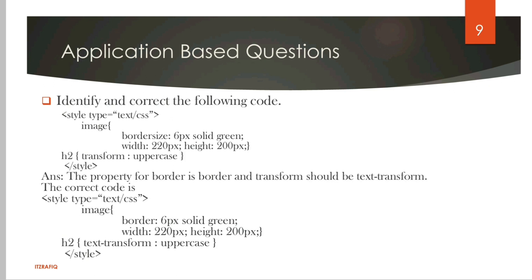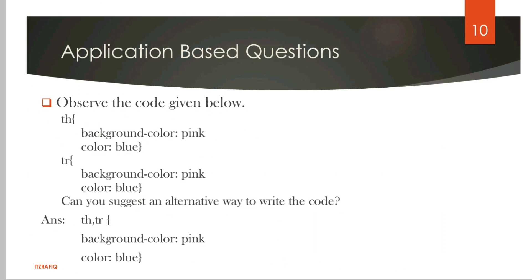Next application-based question - these are all from the book only. Identify the errors and correct the code. Here, border-size - there is no property as border-size, it should be border. Next, H2 transform - there is no property named transform, it should be text-transform. The correct code is written below. See here, TH and TR both have the same property and values. When we have the same property and values, we can write them by using a comma, like in math we can take common. Here also: TR comma TH, then within brackets write all the properties and values.